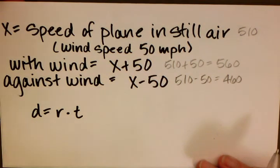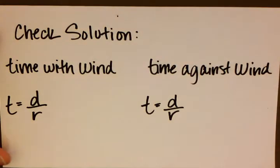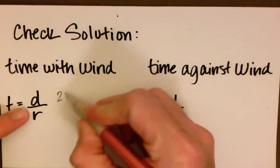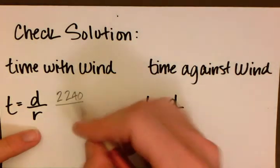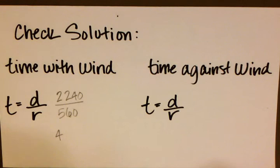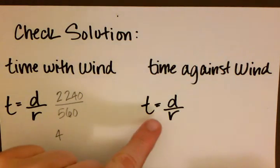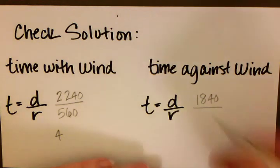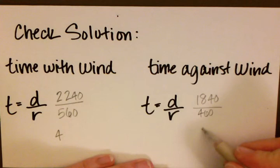The last thing we want to do is check that we've done it correctly. The problem said the airplane flies with the wind in the same time as it flies against the wind. Time with the wind: distance 2,240 divided by rate 560 equals 4. Against the wind: distance 1,840 divided by rate 460 also equals 4.